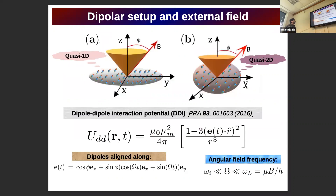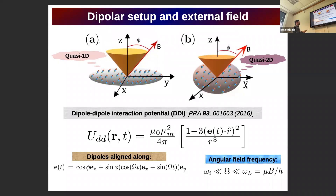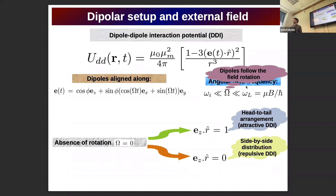These are the two setups that we consider, both quasi-1D and quasi-2D. Here are the dipoles, and we have a rotating magnetic field having a tilt angle phi with the z-axis. This is the dipole-dipole interaction potential. It is anisotropic due to the angular term in the denominator and also long-range due to the r-cubed scaling. The dipoles in our case are aligned along a unit vector which contains the angle phi of the magnetic field with the z-axis and also the angular frequency of the magnetic field.